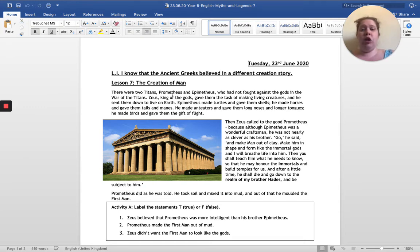Zeus said, 'Go and make man out of clay. Make him in shape and form like the immortal gods.' Remember, immortal means that you live forever. 'And I will breathe life into him. Then you shall teach him what he needs to know so that he may honor the immortals and build temples for us.' So the people that Prometheus would build, man, they would build the temples for the gods and they would always honor the gods, the immortals, the ones that live forever.